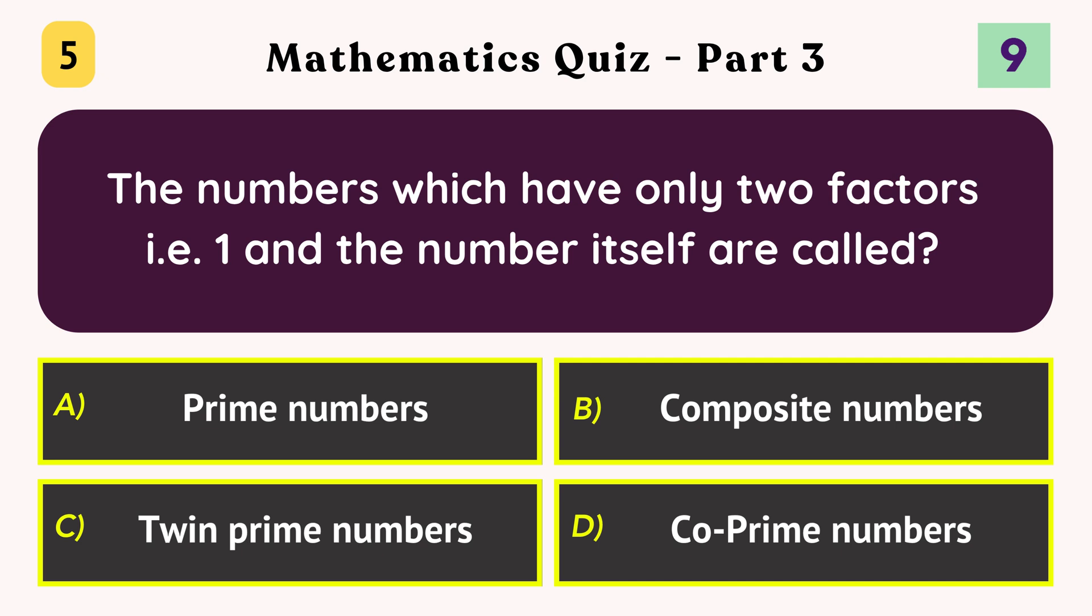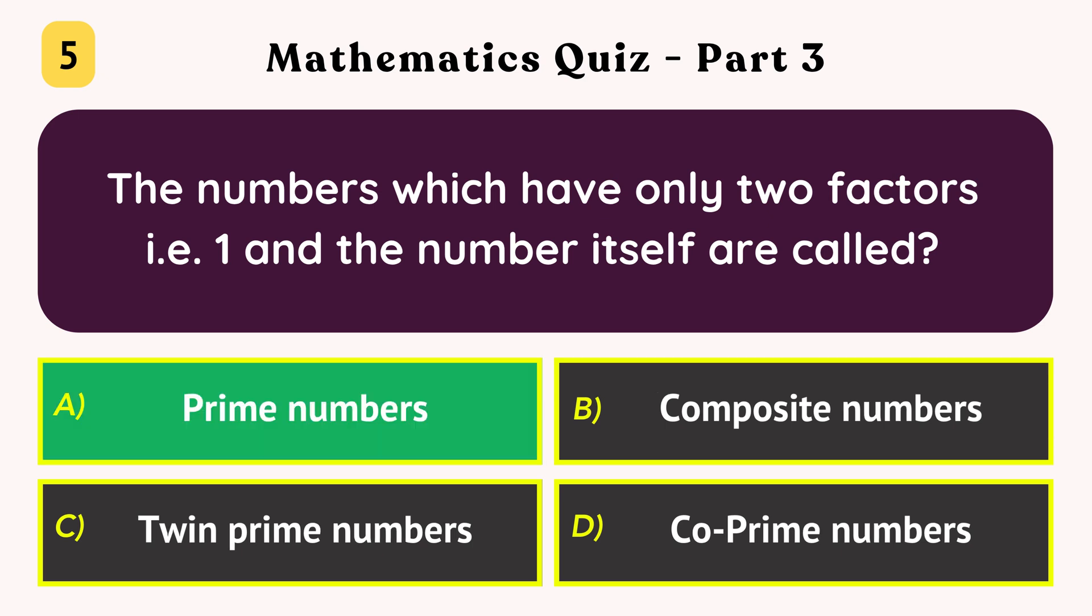The numbers which have only two factors, that is one and the number itself, are called prime numbers.